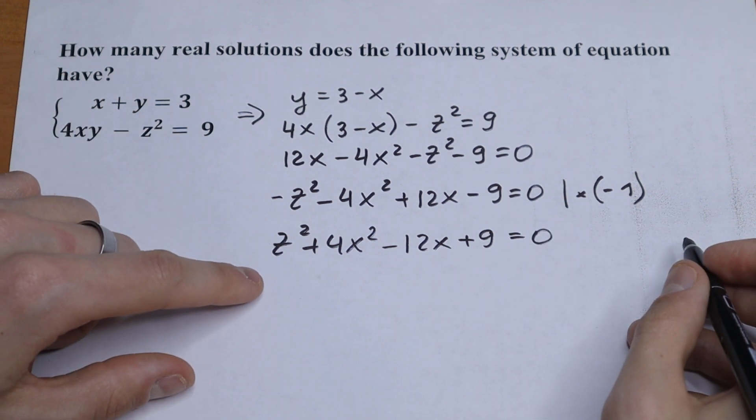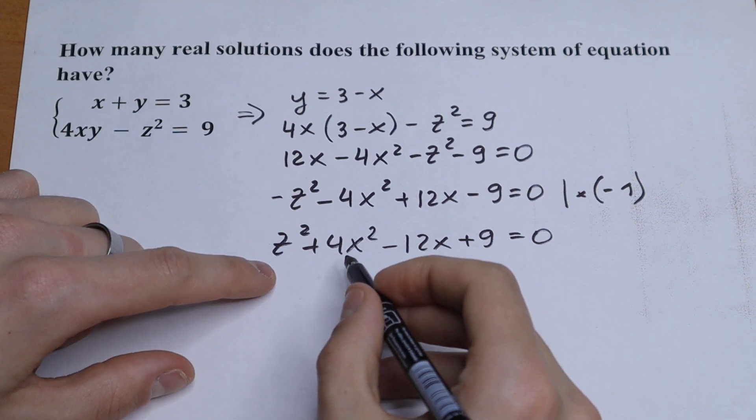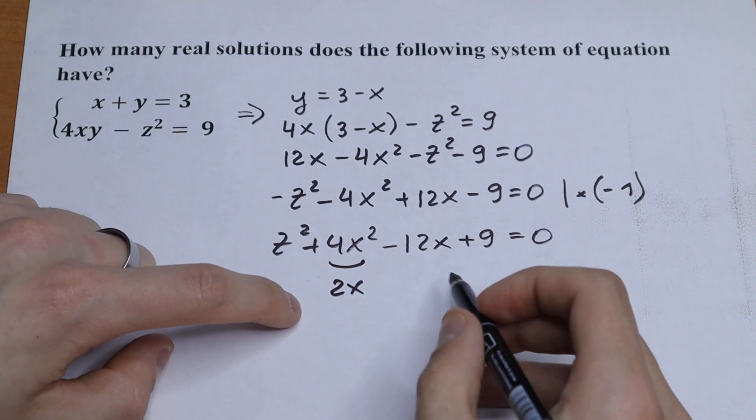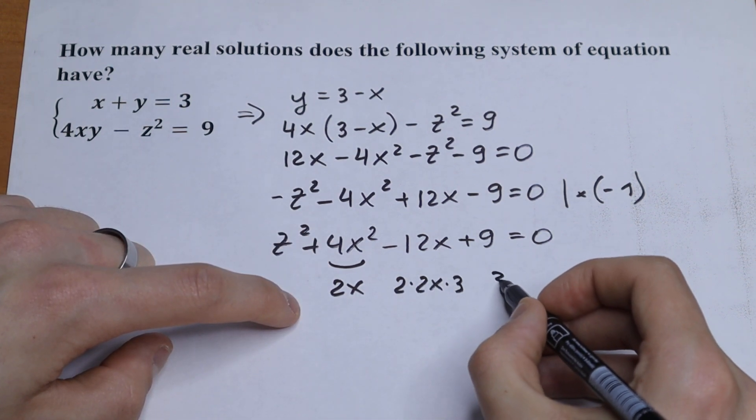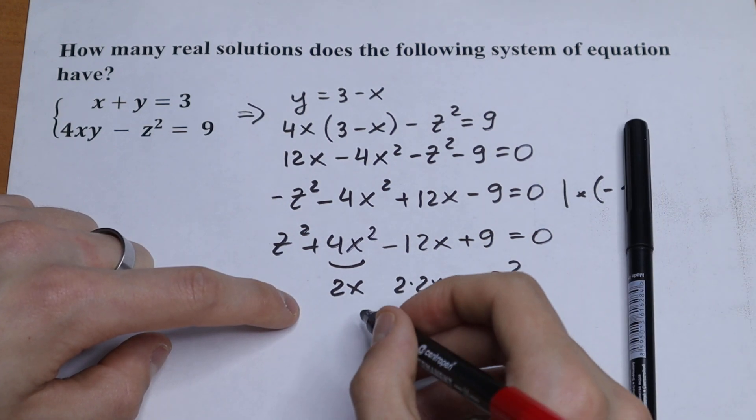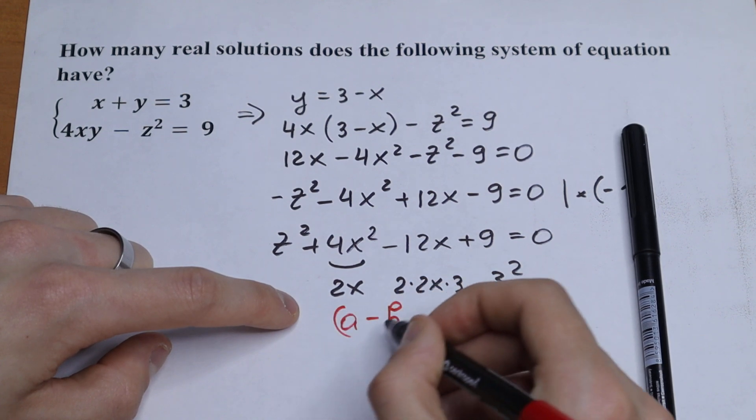And take a look. It's a really good case because we have right here our formula. This is our 2x square, this is our 2 times 2x times 3, and this is our 3 square. So this is our formula, a minus b to the second power.